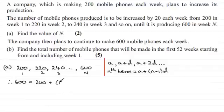Well, n minus 1 times the common difference, and the common difference is it's going up in steps of 20. So it's multiplied by 20.